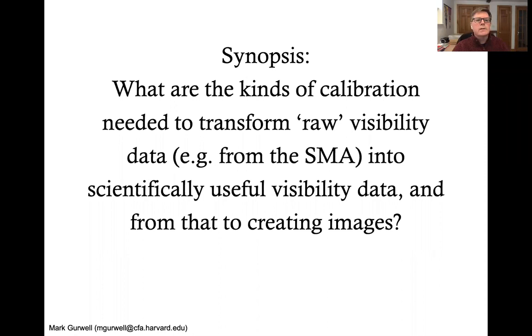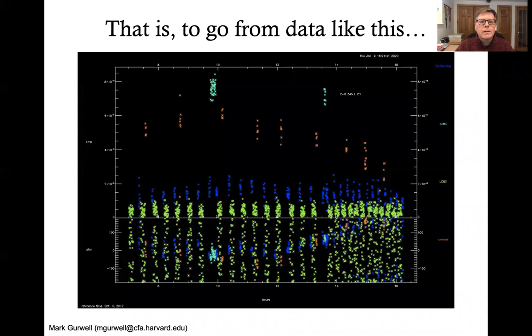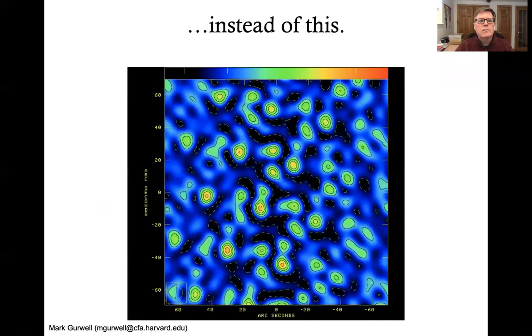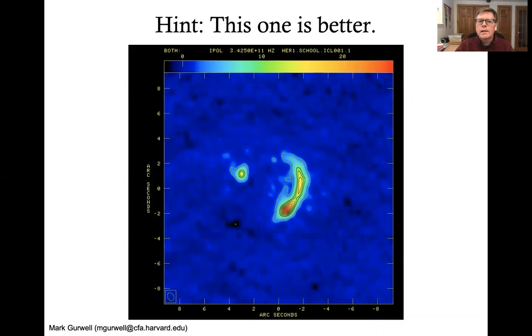So basically what this talk will go through is the basic kinds of calibration that are needed to transform the raw data that come from an interferometer called a visibility such as from the SMA and take that into scientifically useful visibility data and from that creating images. You want to go from data that looks like this to something that looks like this instead of this. I think we can all agree that this one is better.